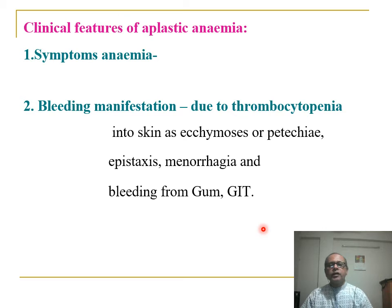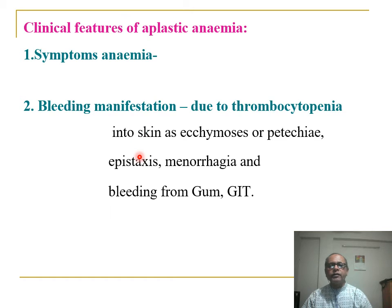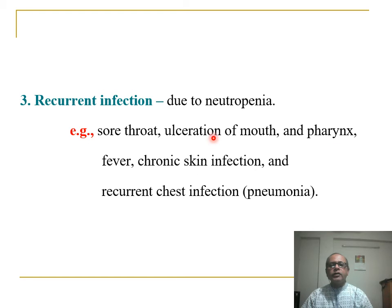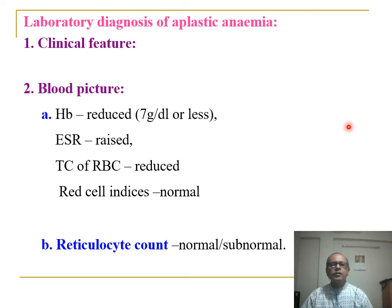Clinical features of aplastic anemia: three cellular elements are affected — red blood cells, white blood cells, and platelets. There are symptoms of anemia. Due to platelet defect, thrombocytopenia is manifested by ecchymosis or petechiae, epistaxis, menorrhagia, and bleeding from gums. Due to neutropenia there are recurrent infections: throat ulceration, pharyngeal ulcers, fever, chronic skin infection, and recurrent chest infection such as pneumonia.